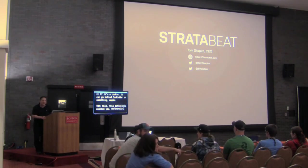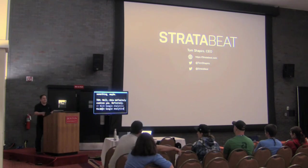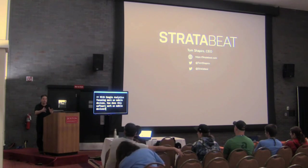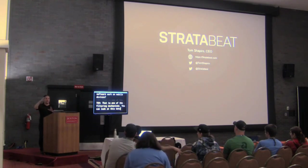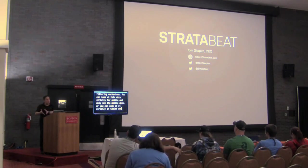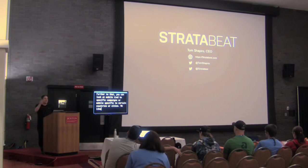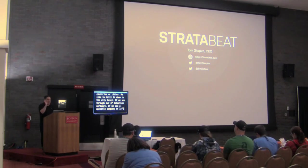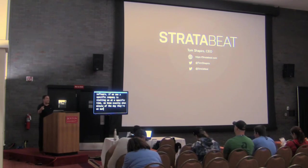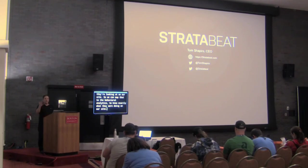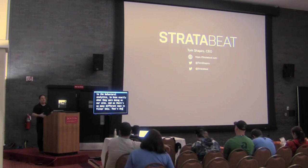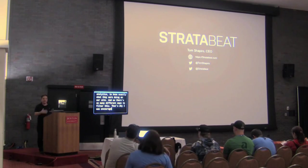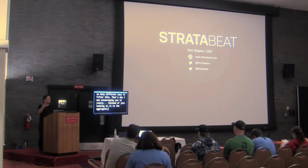Q: With Google Analytics focusing more on mobile devices, how does the software work on mobile devices? One of the filtering mechanisms is you can look at the data strictly for mobile, strictly on a tablet, or strictly on desktop. Further to that, you can look at mobile tied to specific campaigns or specific countries or cities. We like to drill it down to the city level. If we see through our IP detection software that a specific company is visiting us at a specific time, we know exactly what minute of the day they're on our site and what they're looking at, and we can map that to the behavioral analytics.